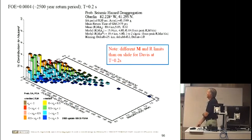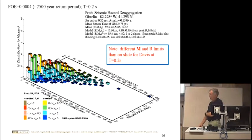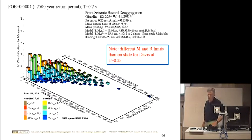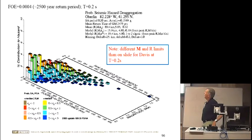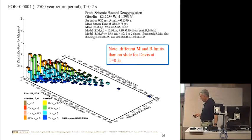As a contrast, a similar picture for Oberlin, Ohio — a site in the middle and eastern United States — shows a very different hazard environment. The scales are different, and the hazard is dominated by very different source characteristics compared to California.